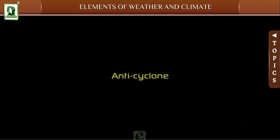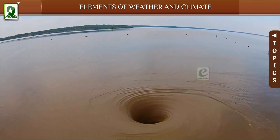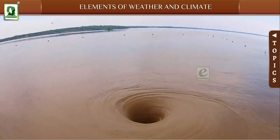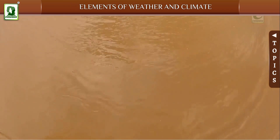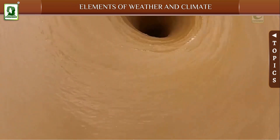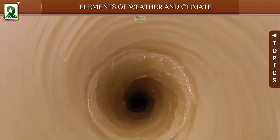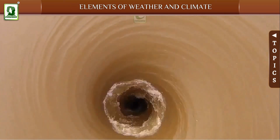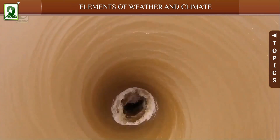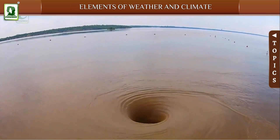When a high pressure area is surrounded by a low pressure area on all sides, gentle winds begin to blow out in a spiral motion from the center in all directions, resulting in anti-cyclones. Anti-cyclones bring clear skies and fine, calm weather.